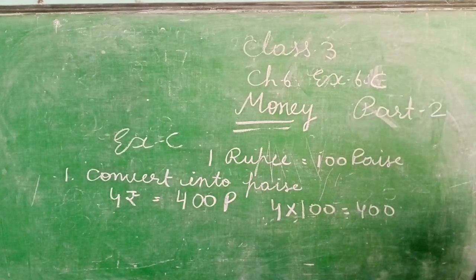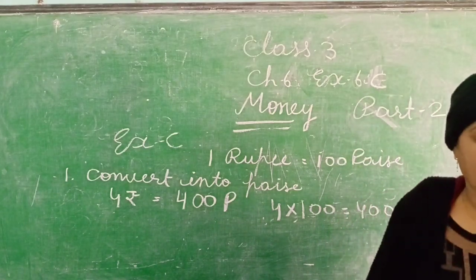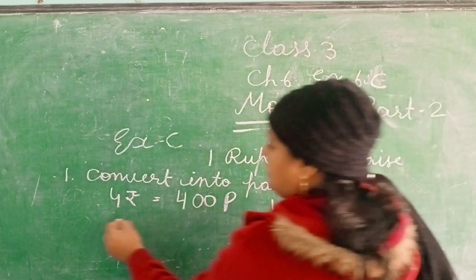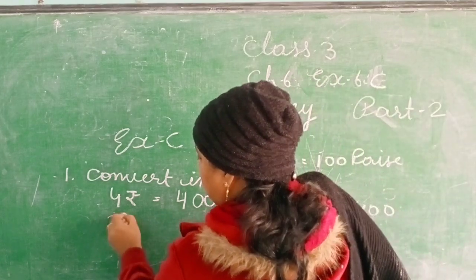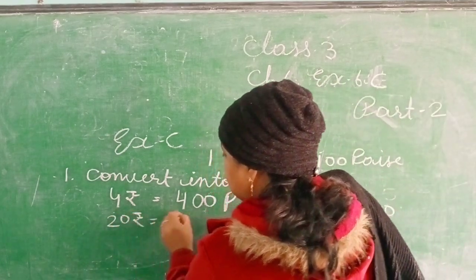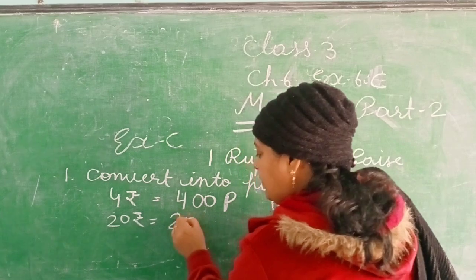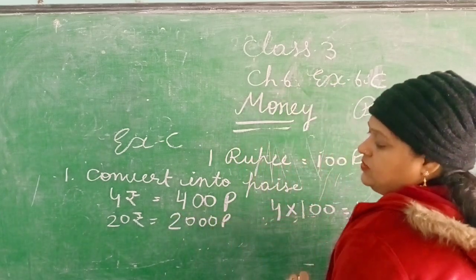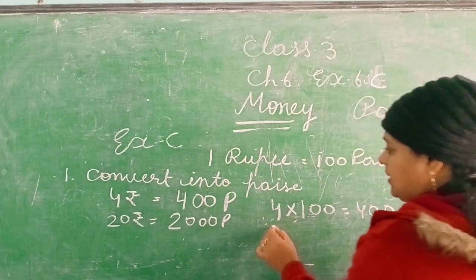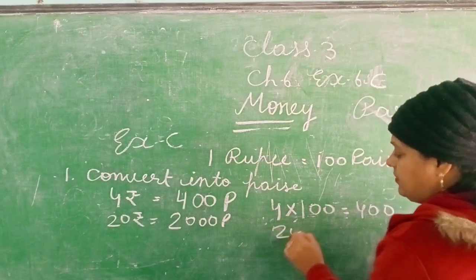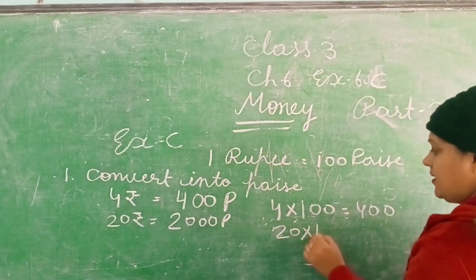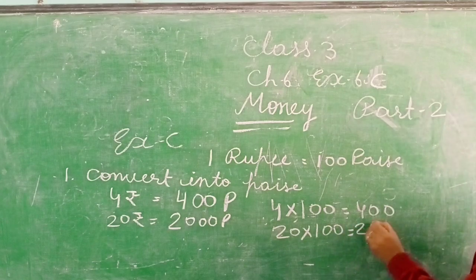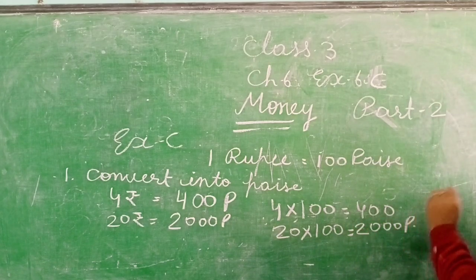Next: 20 rupees. Two zeros lagaen — 2000 paise. Ya kya karenge bachche? 20 multiply 100 is equal to 2000 paise.